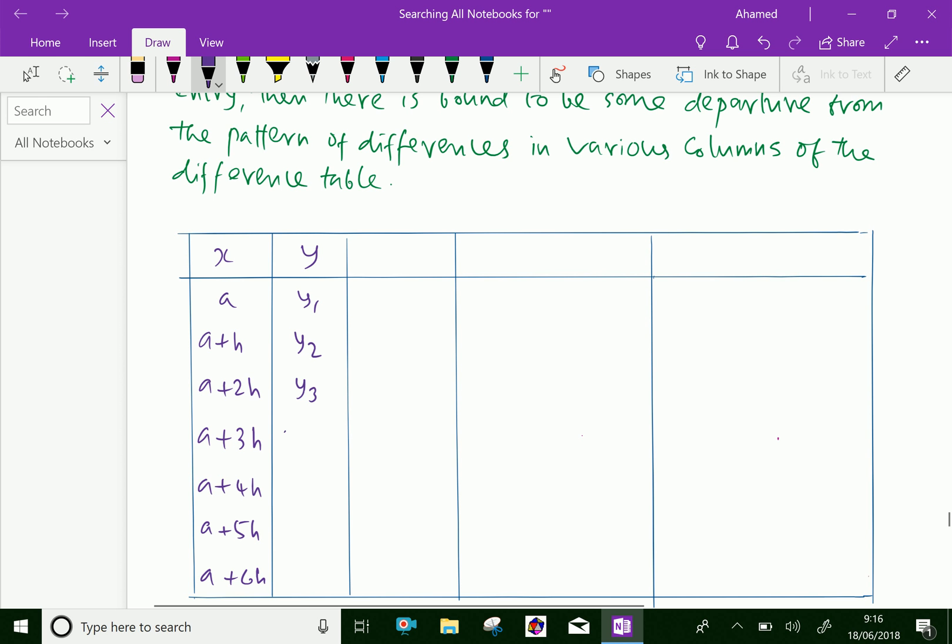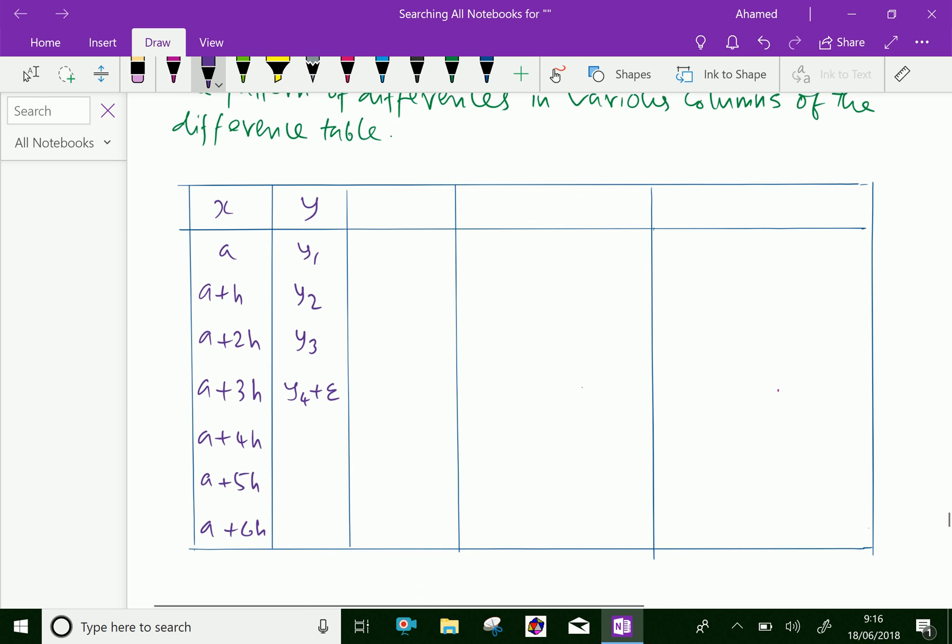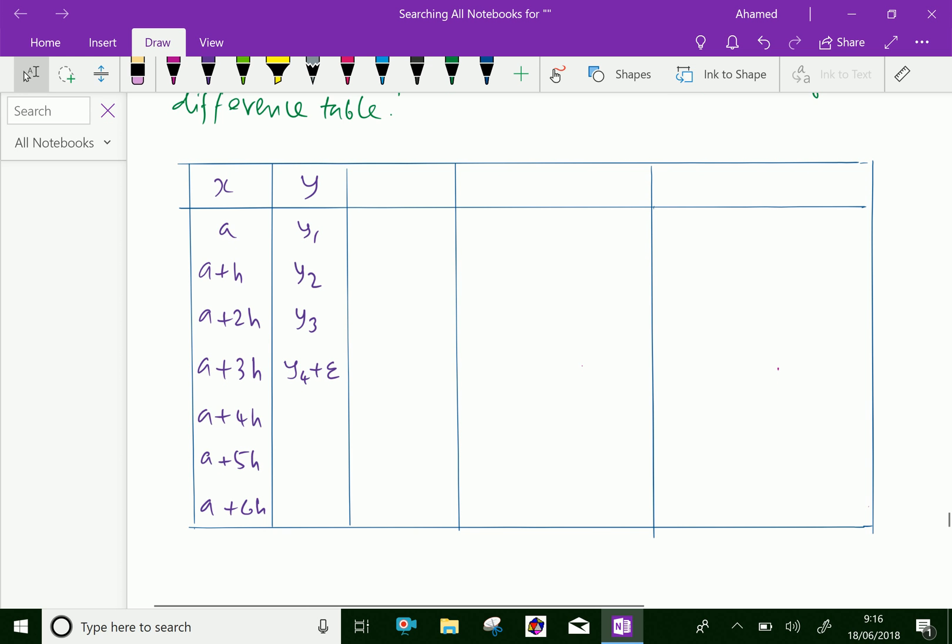That is y4 plus some error plus e. Then for a plus 4h, that is y5, and a plus 5h is y6, and a plus 6h equals y7. These are the y values.